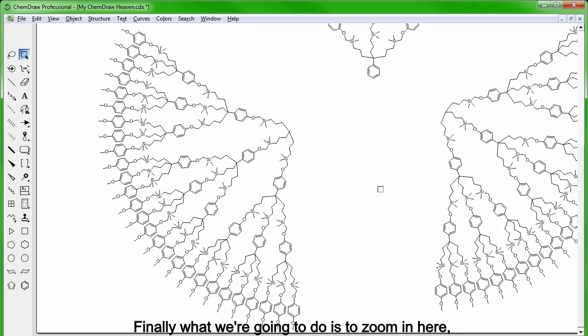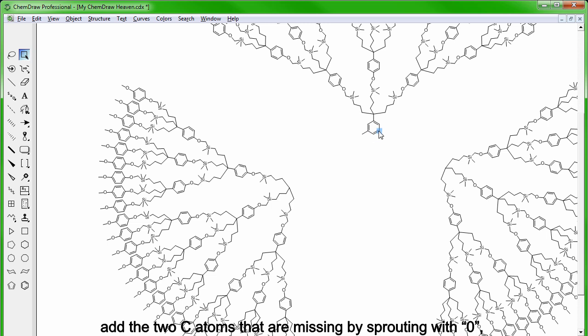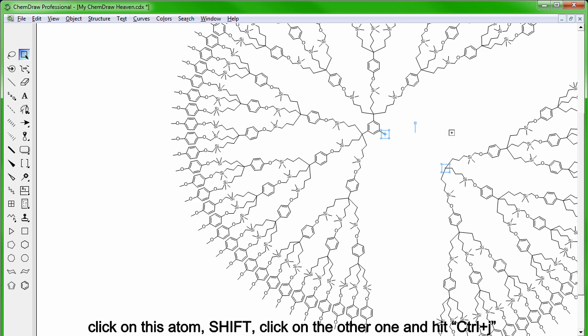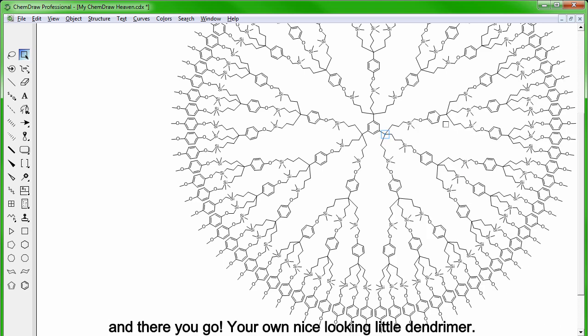Finally, what we're going to do is zoom in here, add two carbon atoms that are missing by sprouting with zero and then select this one, hold SHIFT, select the other one and hit CTRL-J. Remember the first one does not move and now one last time, click on this atom, click on the other one and hit CTRL-J. And there you go, your own nice looking little dendromer.